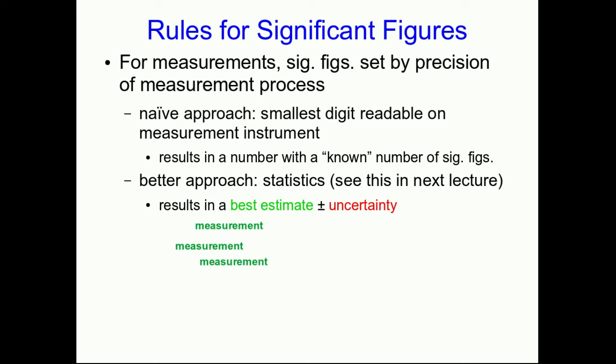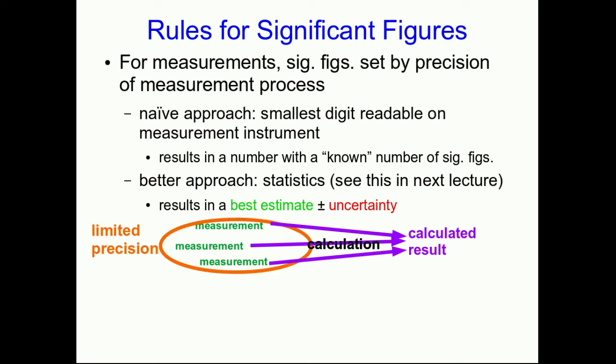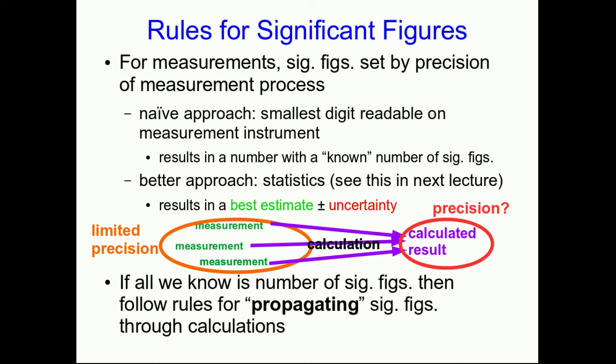But now comes the question. You have a set of measurements, and suppose you have to do a calculation from them. So for example, with the door, maybe you've measured both the height and the width, and you're now multiplying them together to get an area of the doorway. Well, the measurements themselves have limited precision. What's the precision of the calculated result? So what we'll see now is how, when all you know is a number of significant figures, so you're taking the naive approach, where you've just done one measurement, and you've got a number of digits that you think you know, how do you propagate that through the calculation?